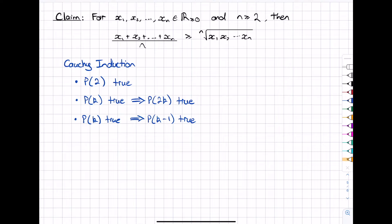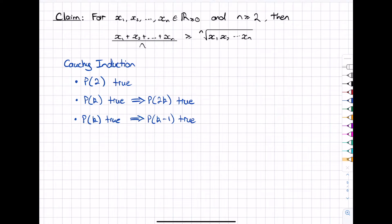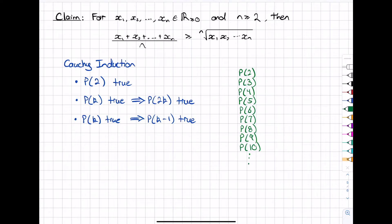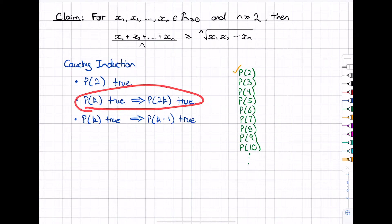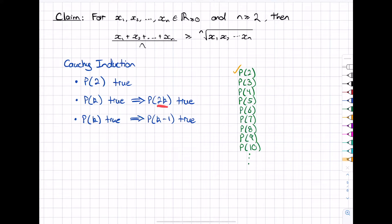It might seem a little bit abstract in symbolic form, so let's write out a list of propositions. Each proposition means we're taking the statement and writing it for a particular value of n. We'll start off with p of 2 as our base case, and list a few out to see how these three steps prove the statement for all values of n we're interested in.